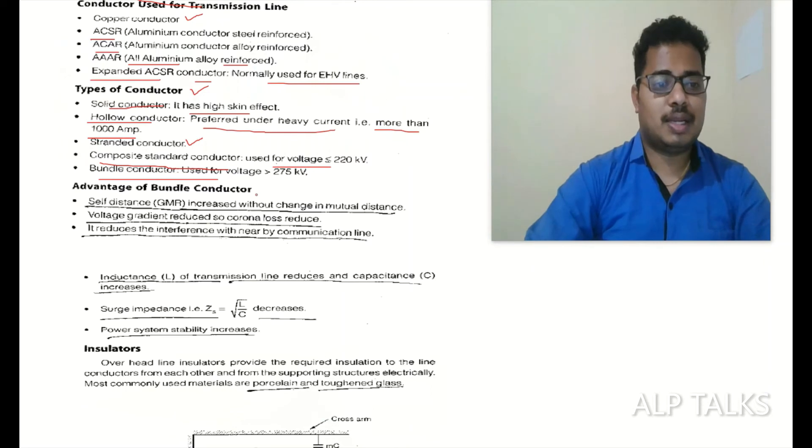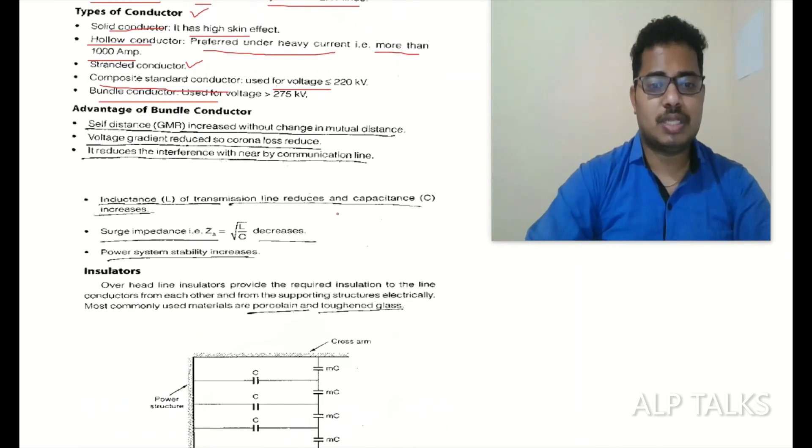Advantages of bundle conductor: self GMD increased without change in mutual distance, voltage gradient reduced so corona loss reduced, it reduces the interference with nearby communication lines, inductance of transmission line reduces and the capacitance increases, surge impedance Zs equal to square root of L by C decreases, power system severity increases.